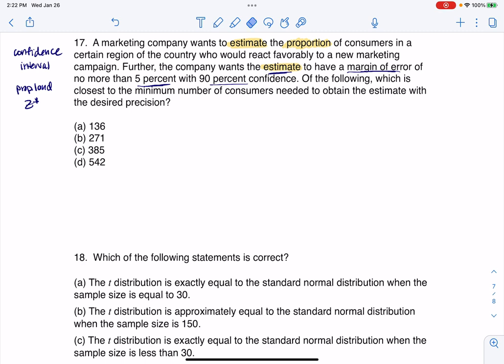Okay, so this is solving for sample size, right? Because they're saying here, what's the minimum number of consumers? So how many people does this marketing company need to include in its sample so that they have a 5% margin of error at 90% confidence? Well, we have an inequality for that. We know that N has to be greater than or equal to, and here's the inequality.